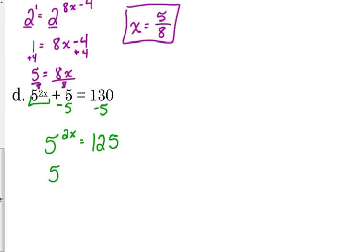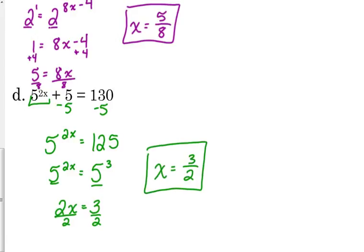Now we can rewrite the right side so that it's base 5. We've got the same base, so we set the exponents equal to each other. 2x is equal to 3. Divide both sides by 2. x is equal to 3 halves.